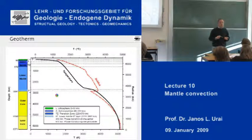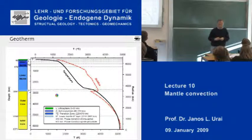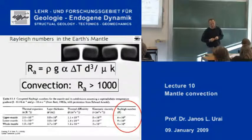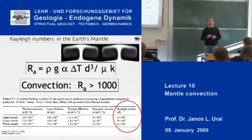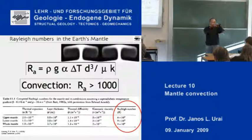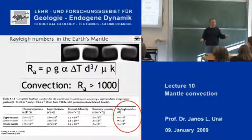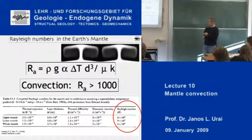The process going on inside the mantle is called convection. You've probably all heard about convection — hot material coming up, cold material going down, forming these circulations. So what is convection, and what is this Rayleigh number R?